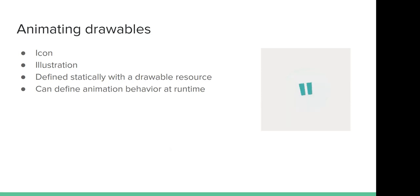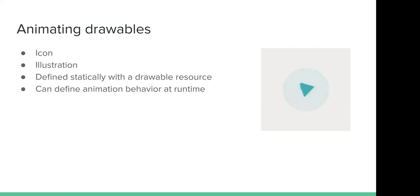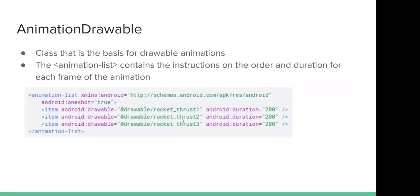When you want to animate a bitmap such as an icon or illustration, you should use the Drawable Animations API. Usually these animations are defined statically as a drawable resource, but you can also define animation behavior at runtime. An example is animating a play button that transforms into a pause button when clicked — this communicates to the user that the two actions are related.